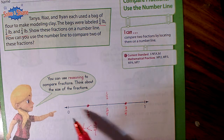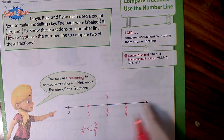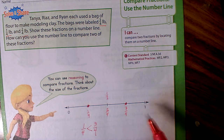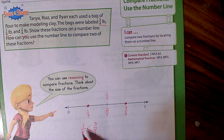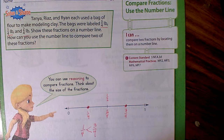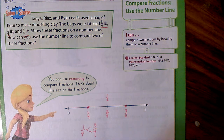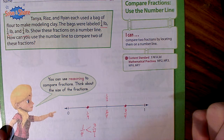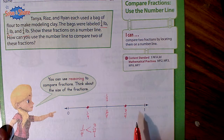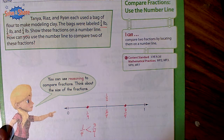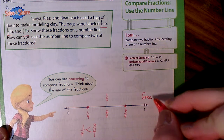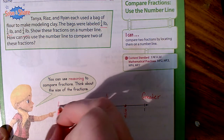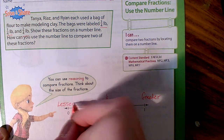We could also say one-fourth is closer to zero than it is to one, which means one-fourth is less than three-fourths. You can use number lines to compare fractions with like denominators. A fraction located to the right of another fraction on a number line is the greater value; going to the left is the lesser value.